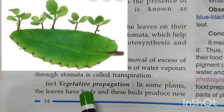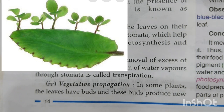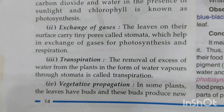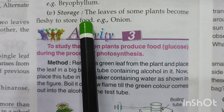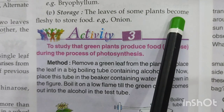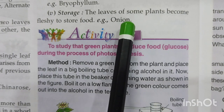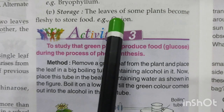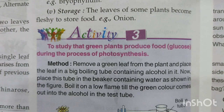The next function is vegetative propagation. In certain plants, leaves develop buds from notches on the leaf margins, and these buds can be used for new plant growth — this is known as vegetative propagation. You can find this in a Bryophyllum leaf. The last function is food storage — in some plants the leaves become fleshy because they store food in them, like the leaves of onion, which become swollen due to food storage.